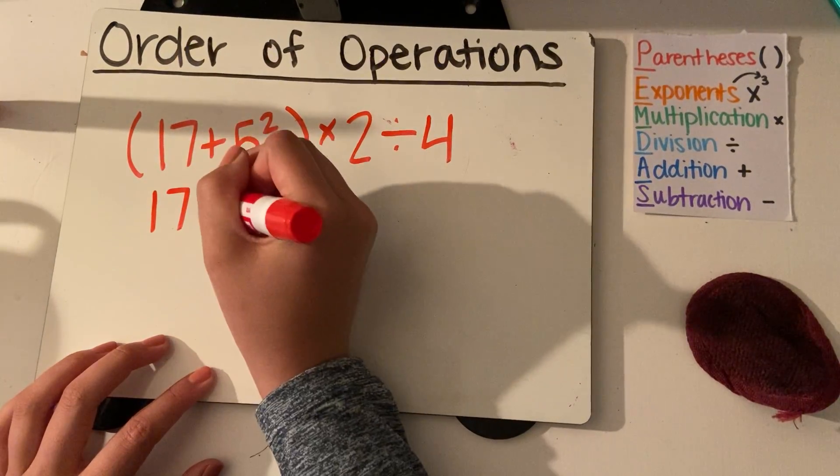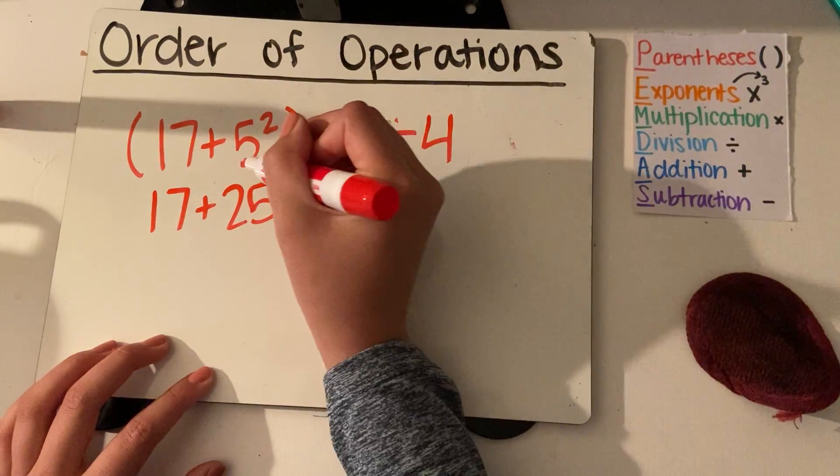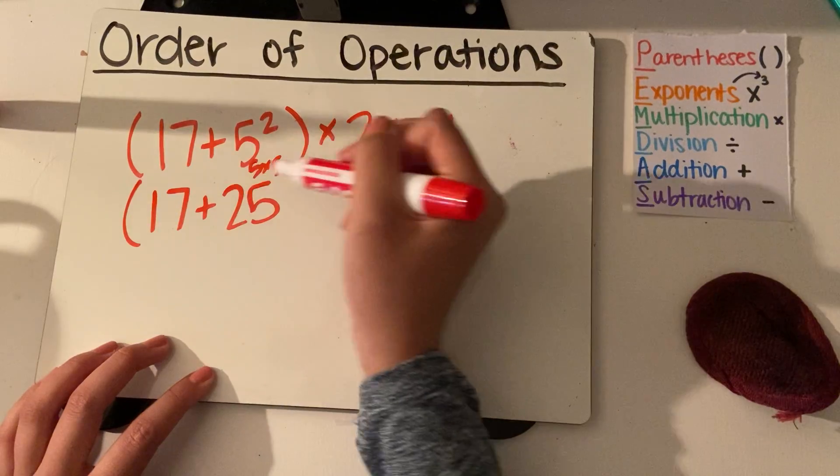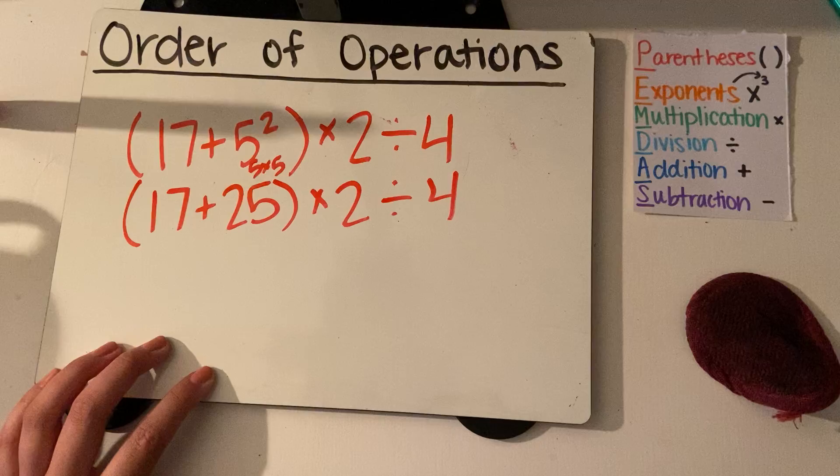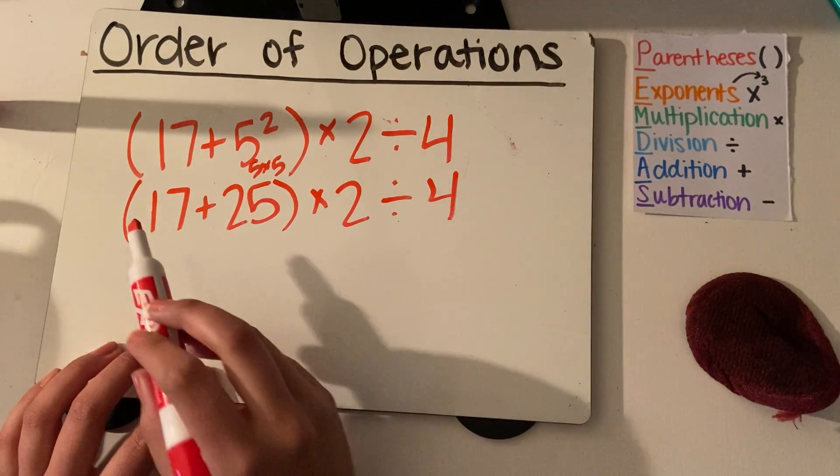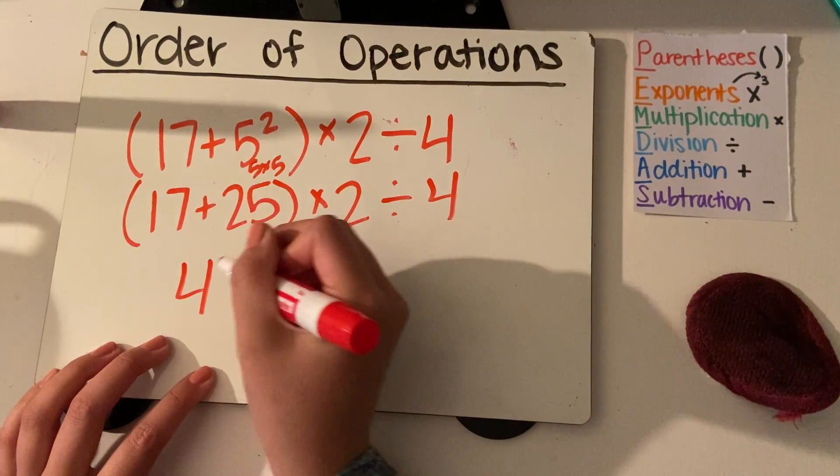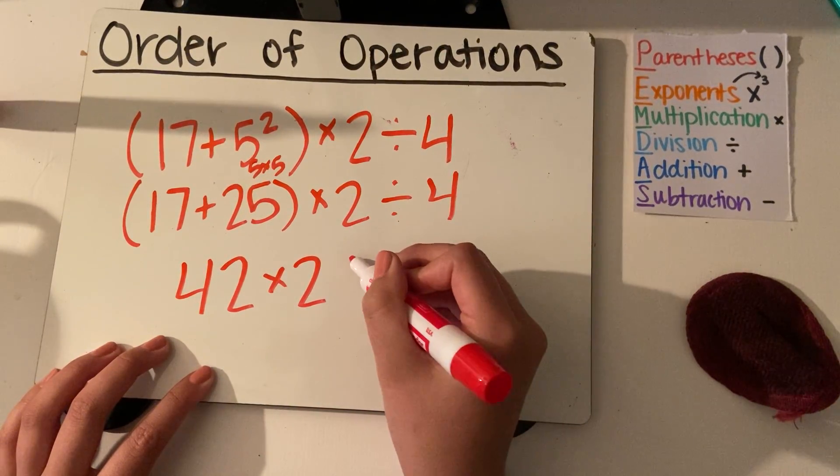So I'm going to solve 17 plus 25, because I know that 5 squared is also 5 times 5, which equals 25, times 2 divided by 4. So 17 plus 25, we're going to get 42, times 2 divided by 4.